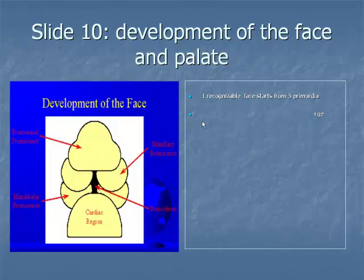Item 2: the mandibular processes are the first to merge with each other at the midline and eventually give rise to the mandible and the lower part of the face and tongue.